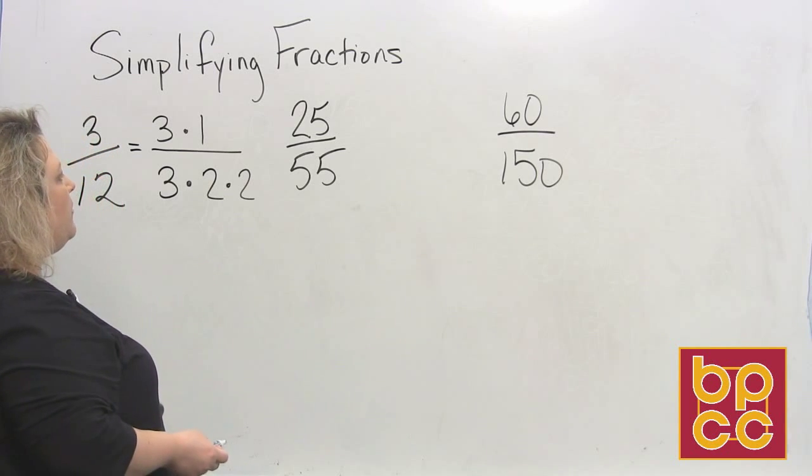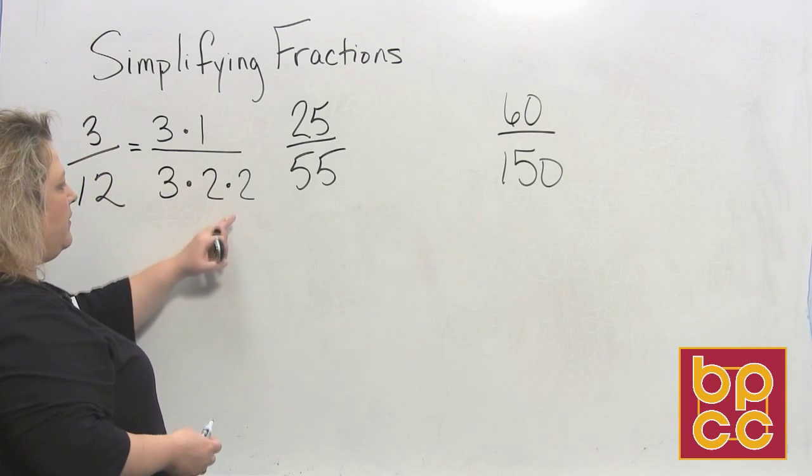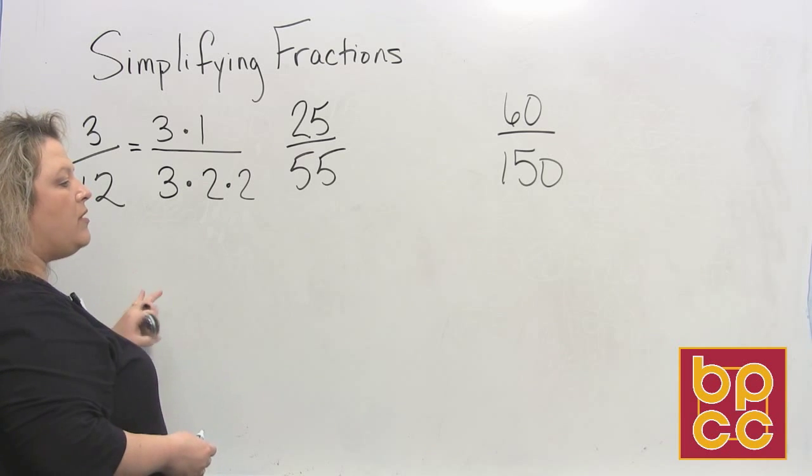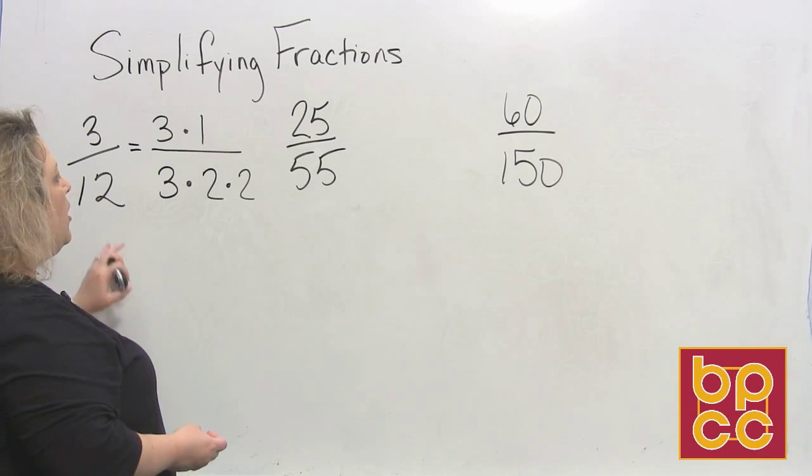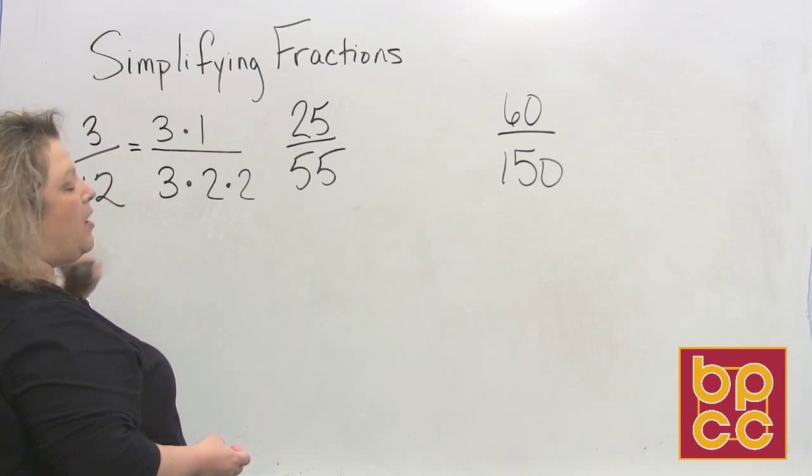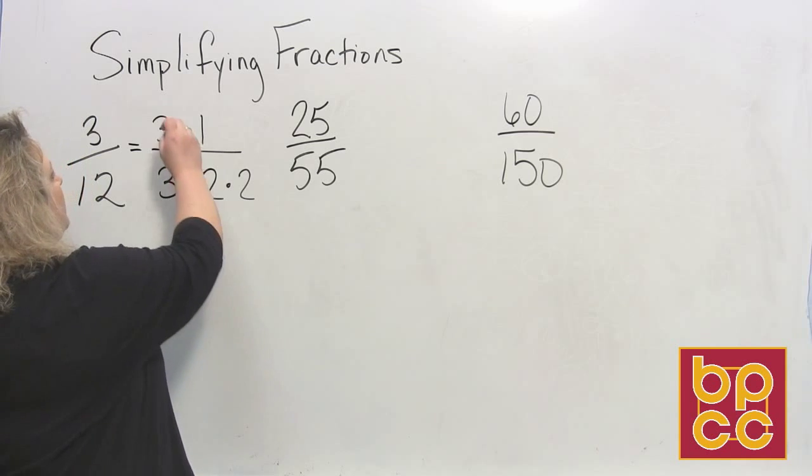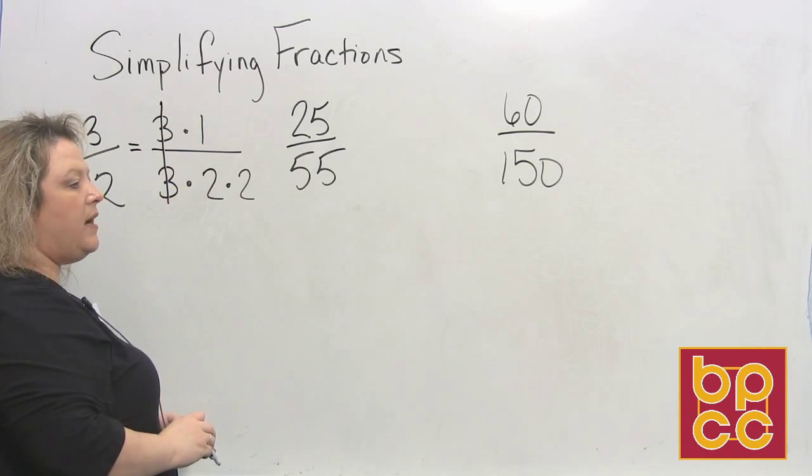So what we do in order to get prime factorization, there it is, now we're going to cross off or cancel or reduce the fraction by our GCF. Our greatest common factor that they have in common is a 3, so we're going to reduce it and divide those 3s out.